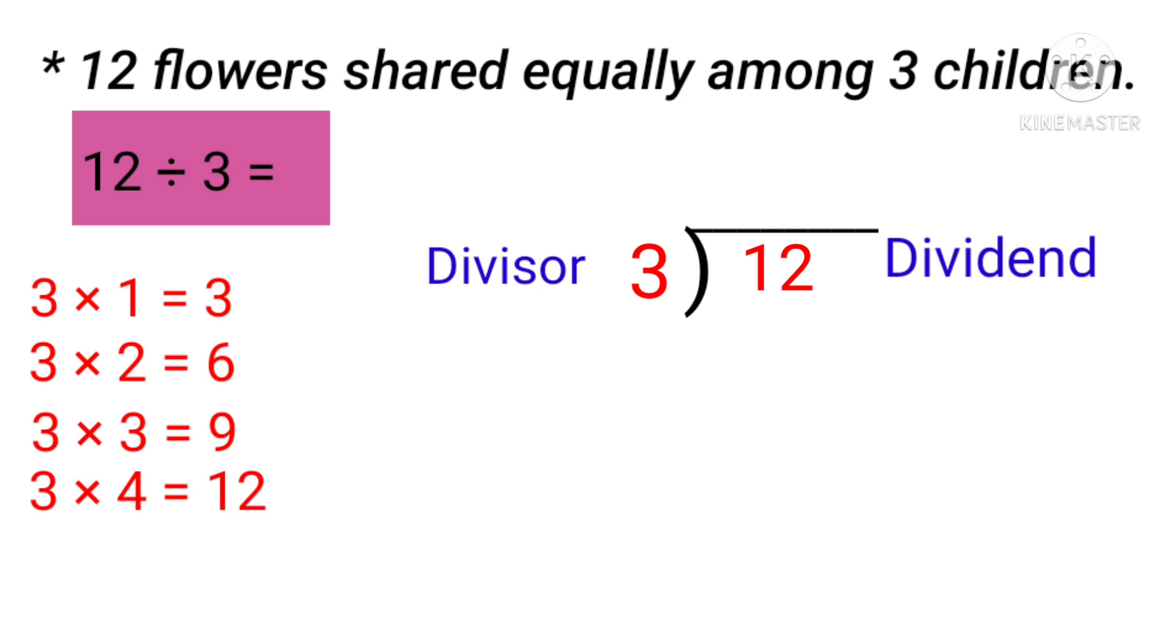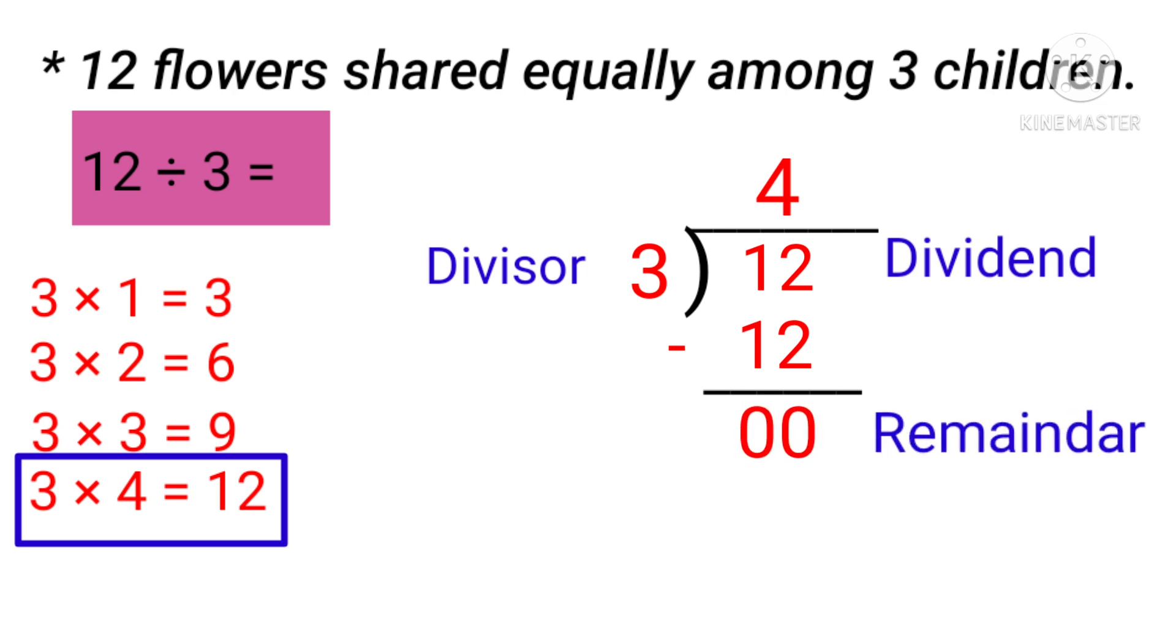We got the answer at 3 fours are. We will write the 4 over here and we will subtract the number 12 from 12. So 12 minus 12 is equal to 0. So we will write 0 here. In this example, 0 is the remainder and 4 is the quotient.